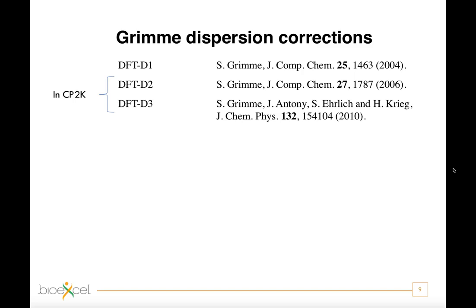Really, with the term Grimm dispersion correction, one can refer to at least three different models developed in the years and with increasing complexity. The most recent ones, called DFTD2 and DFTD3, are implemented in CP2K.